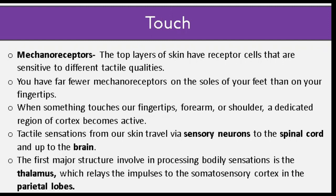Tactile sensations from our body travel via sensory nerves to the spinal cord and up to the brain. The first major structure involved in processing bodily sensations is the thalamus, which relays information to the somatosensory cortex in the parietal lobe. You may want to review cognitive neuroscience from the previous lesson for more on the thalamus.